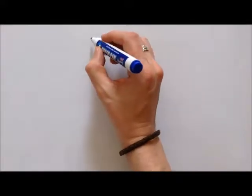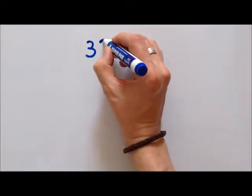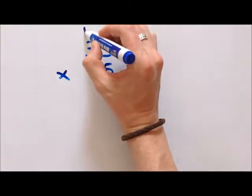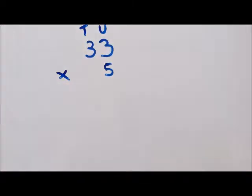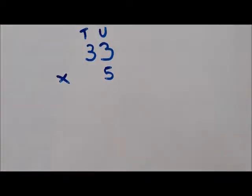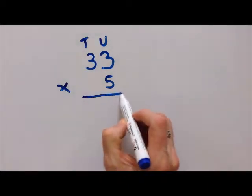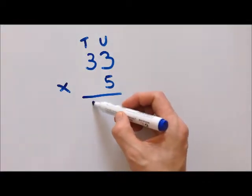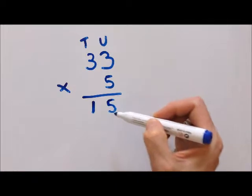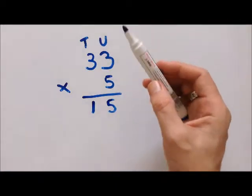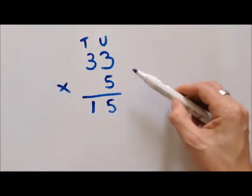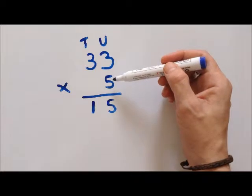We'll start off with a two digit number, so let's start off with thirty three times five. I'll put our columns in — this is tens, this is units. First off we start with our units column: five times three, well that's fifteen. It's really important that you get to know all your times tables — it's fundamental to try and learn them all off by heart so these can be done a lot quicker.